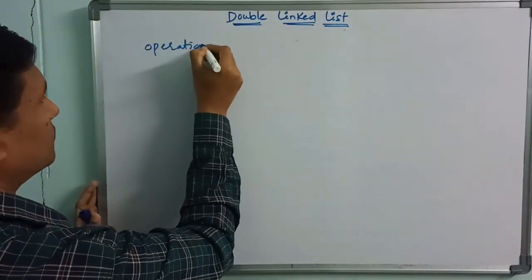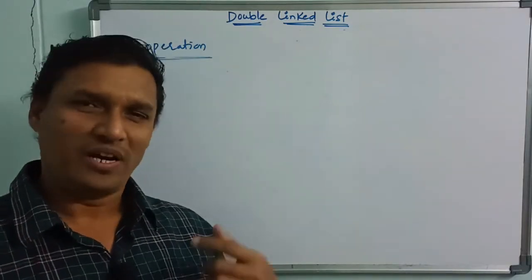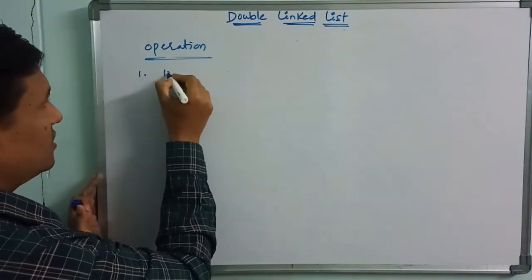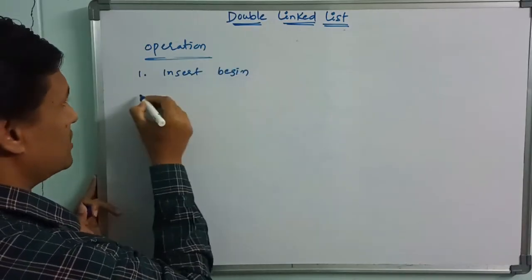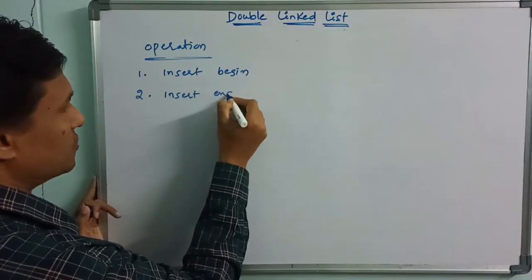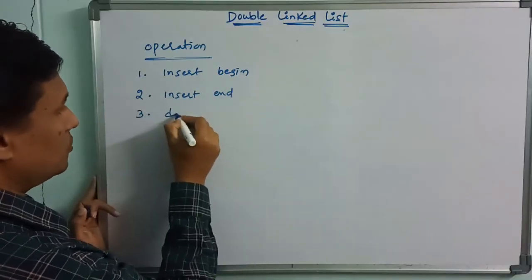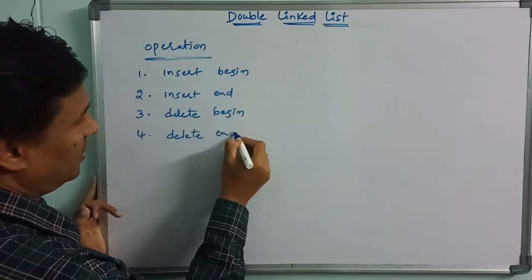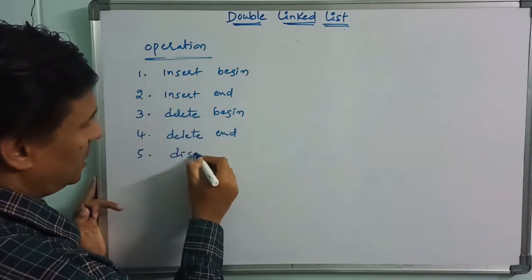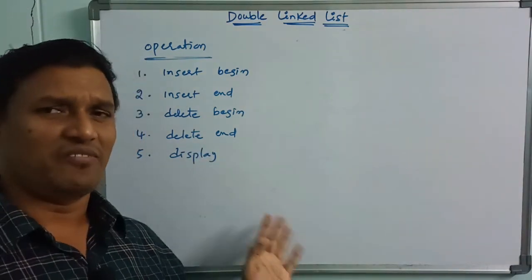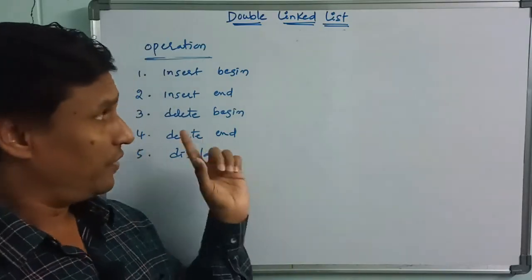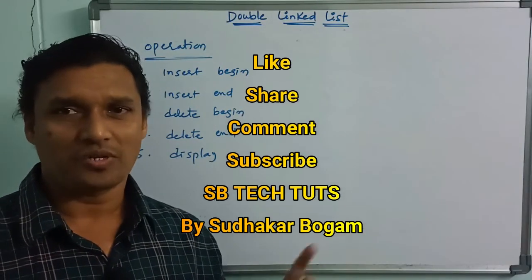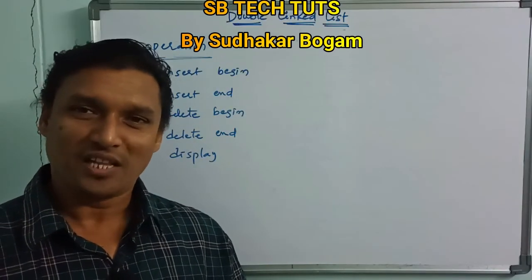Now, operations. For single linked list, circular linked list, double linked list, and double circular linked list, you can see the operations. The first operation is insert at beginning. The element is inserted at the beginning — insert begin. Then insert at end, insert at a given position, delete at beginning, and delete at end.